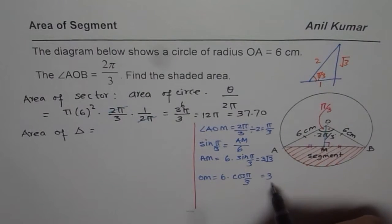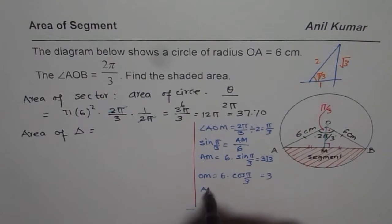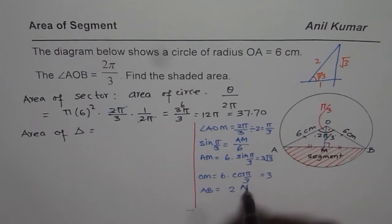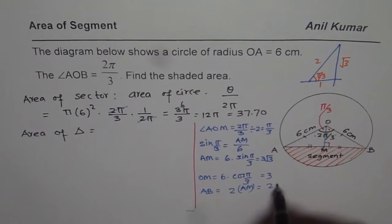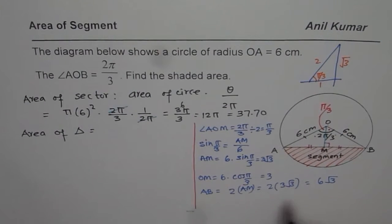So these are my sides. Another thing you will notice that base is AB, so AB is indeed equal to 2 times AM, 2 times AM which is 2 times 3 square root 3 or 6 square root 3. So now we know all these sides.